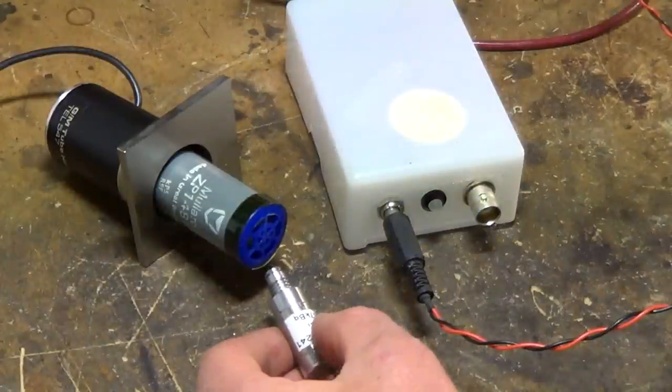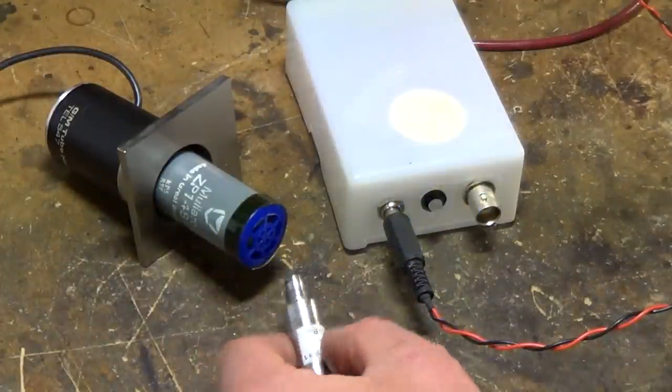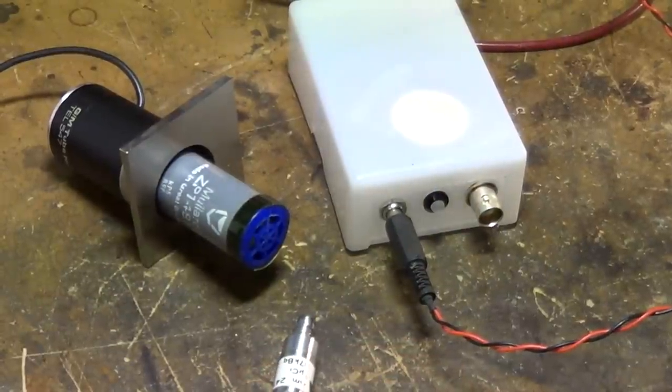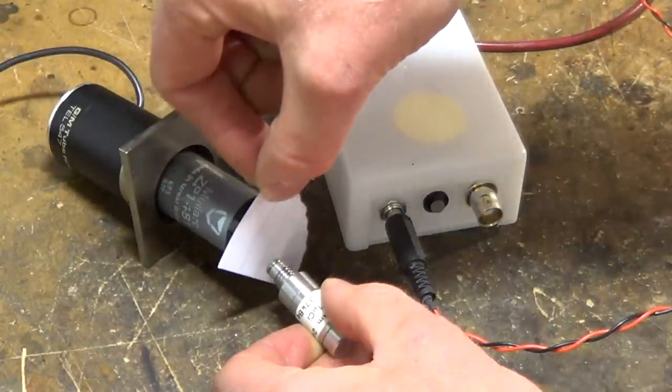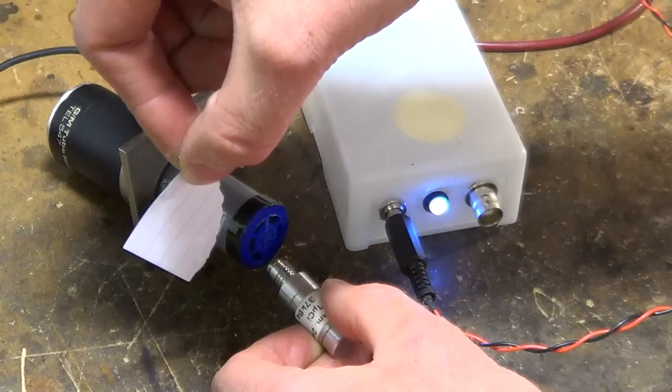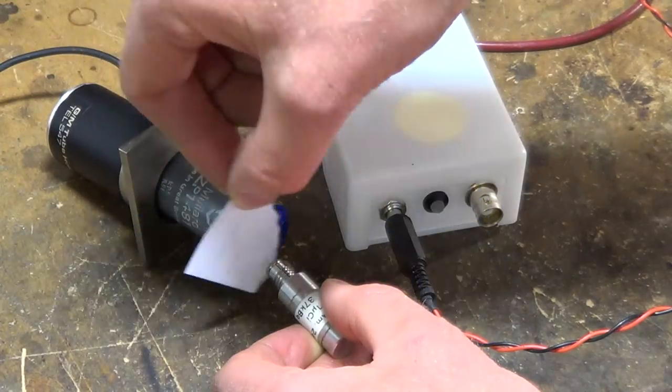And obviously since these are alpha particles it's easy enough to block them with just a piece of paper. Some get through but it blocks them pretty effectively.